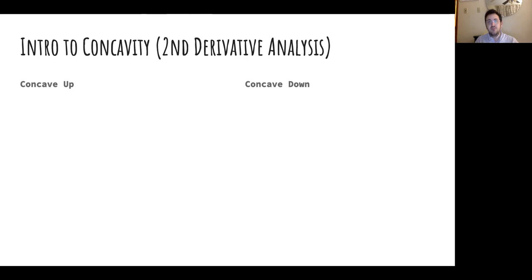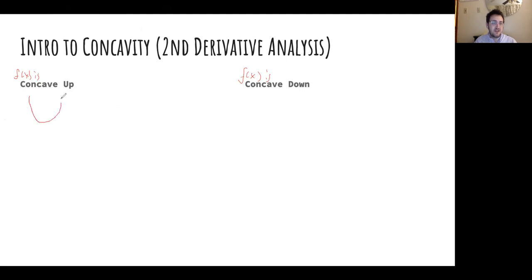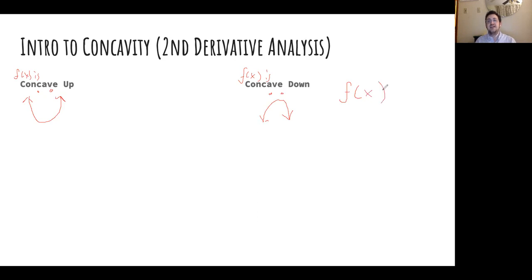If you haven't seen concavity before, that's all right — I'm going to show you pictures of what it looks like. Basically, we say that f(x) is concave up or f(x) is concave down. Concave up looks like that smiley effect in the graph — I like to put a little smiley face to help you remember. So if it's concave up, think up, think positive, think smiley face. And for concave down, think of a frowny face.